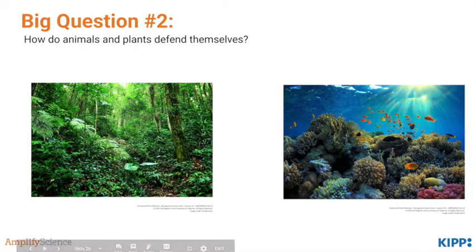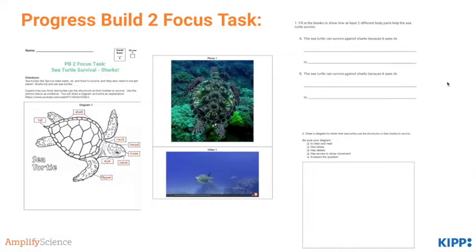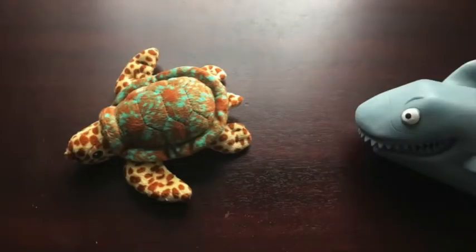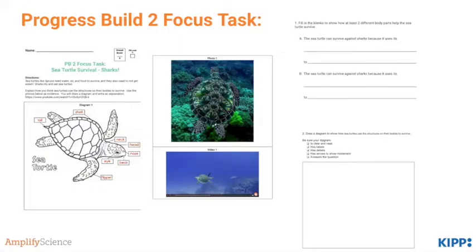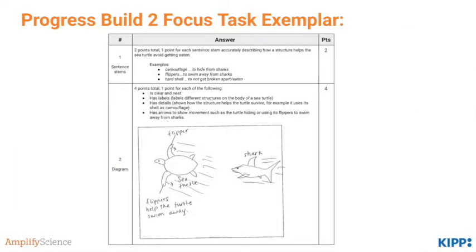By the end of these lessons, students should understand the fundamentals of Progress Build 2. Take a second to read over the statement by pausing now. This all leads up to the Progress Build 2 focus task: Sea Turtle Survival with Predators. Go ahead and pause now to complete the task, then pause again to look over the scoring guide more closely.